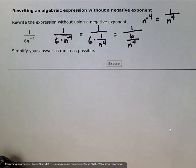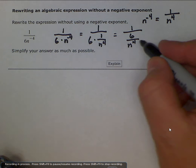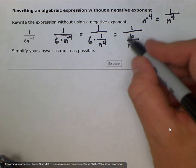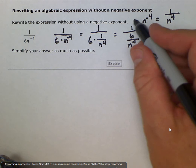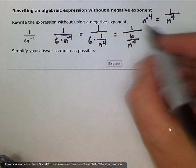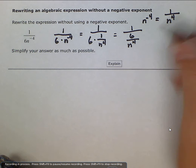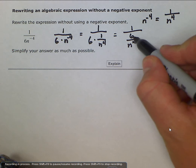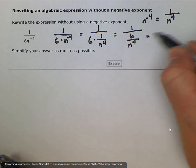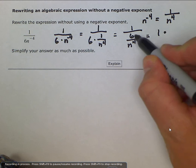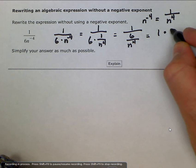So now we have a fraction as the denominator. When we have a fraction on either the numerator or the denominator, whenever we are dividing by a fraction, we have to multiply by the reciprocal. So multiplying by the reciprocal would look like 1 times the reciprocal of the denominator. Instead of 6 over n to the 4th, it's going to be n to the 4th over 6.